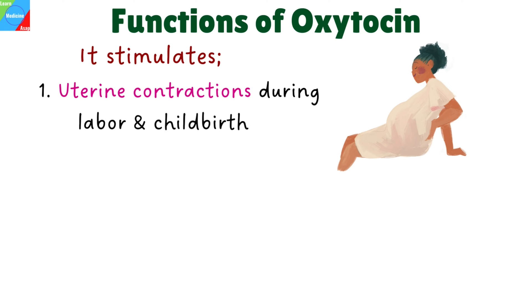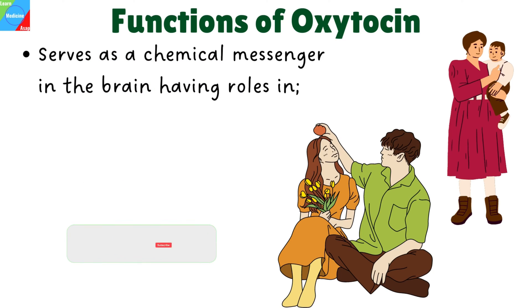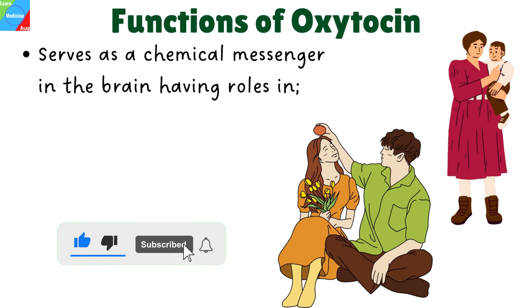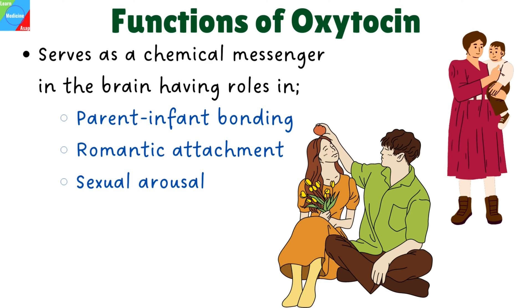What are the functions of oxytocin? Oxytocin has two major physiological effects: it stimulates uterine contractions during labor and childbirth, and stimulates breast tissue contractions to promote lactation after childbirth, additionally serving as a chemical messenger in the brain. Oxytocin plays a significant part in a variety of social behaviors and relationships among people. This includes parent-infant bonding, romantic attachment, sexual arousal, trust, and social recognition.